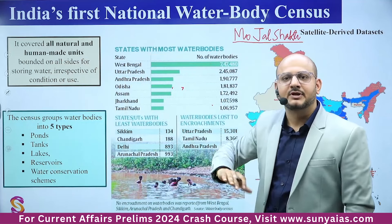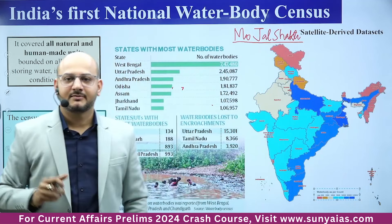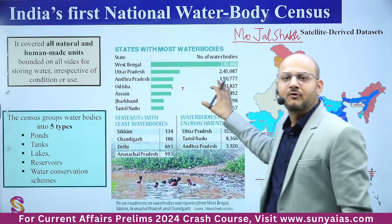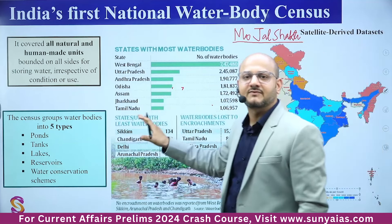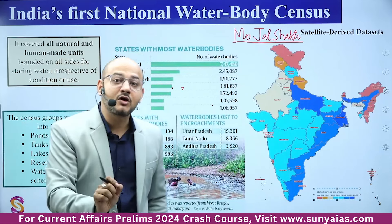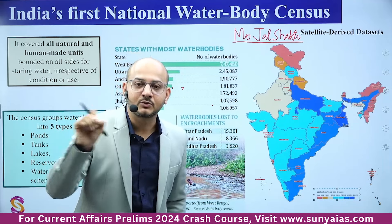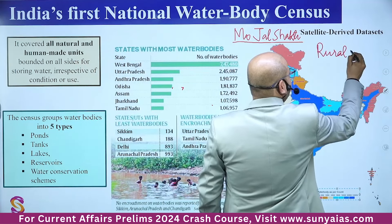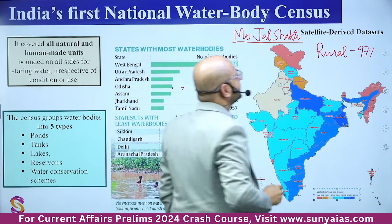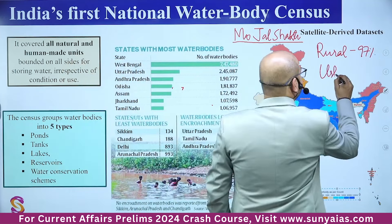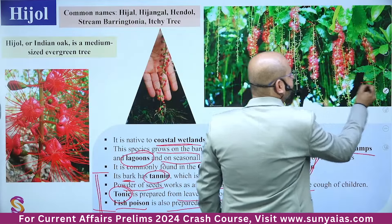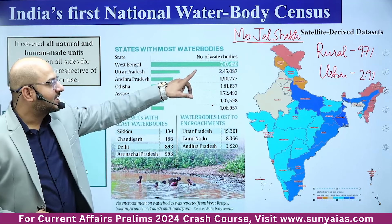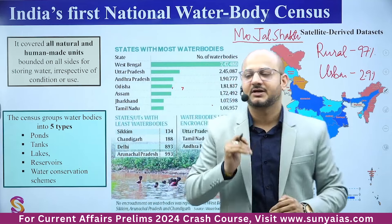People are putting sand and creating concrete structures — building commercial projects or houses over water bodies — this is called encroachment. The census takes an extensive survey of the distribution of water bodies, emphasizing the disparity between rural and urban areas. More than 97% of these water bodies are in rural areas, while only approximately 2.9% are in urban areas.